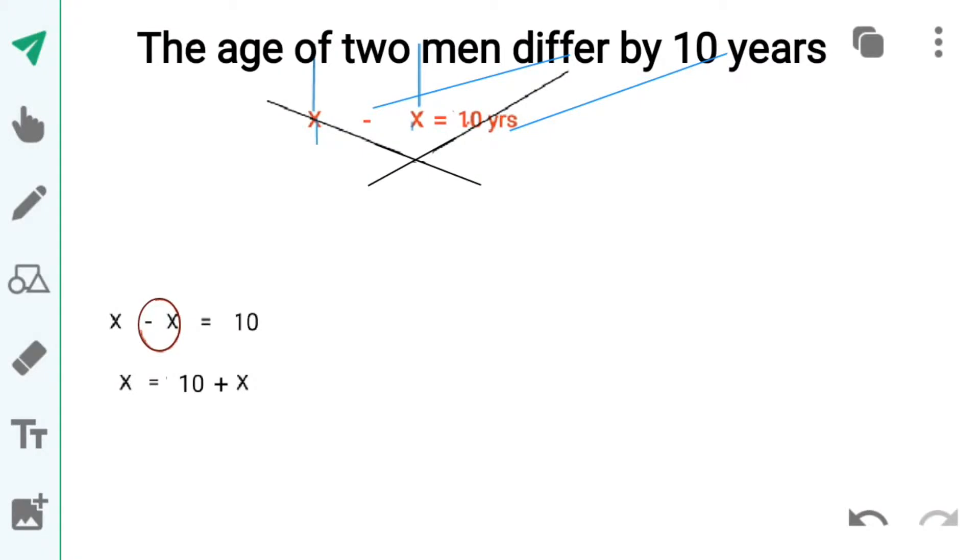Pehle first statement leengge. The age of two men differ by 10 years. Ab hum yahaan x kisay leengge. Aisay question mein suppose hum dono ko x leen aur aisay likhaen x minus x equals to 10 years, toh yahe wrong hai.